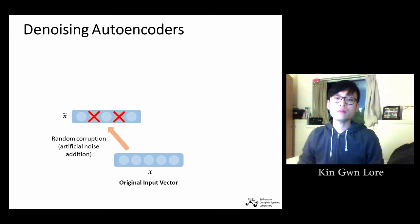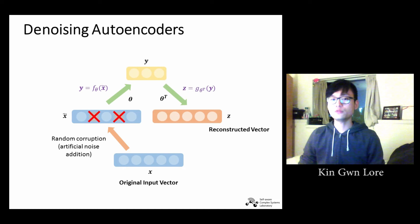The autoencoder tries to map x-bar to y via model parameter theta, and the model attempts to reconstruct the output z from the transpose theta. This reconstructed vector is then compared with our original input vector to obtain a loss, where the error is backpropagated to fine-tune the weights and biases which are represented by the parameter theta.